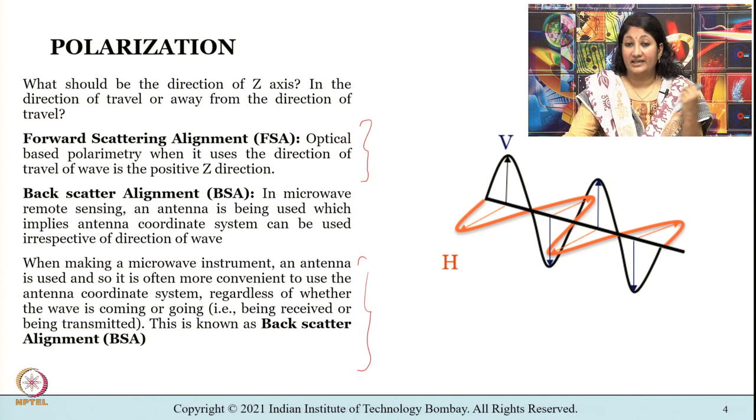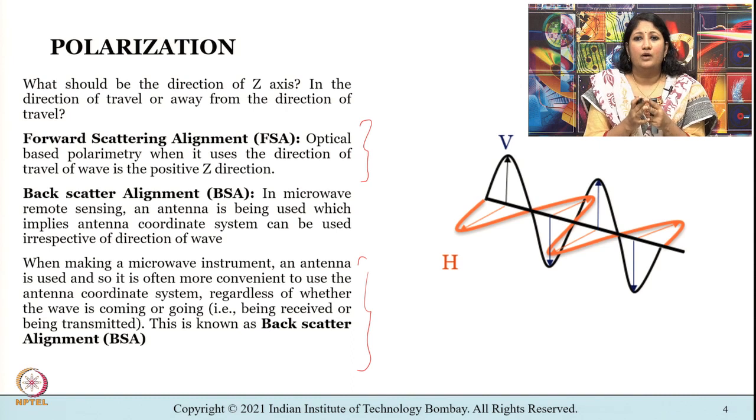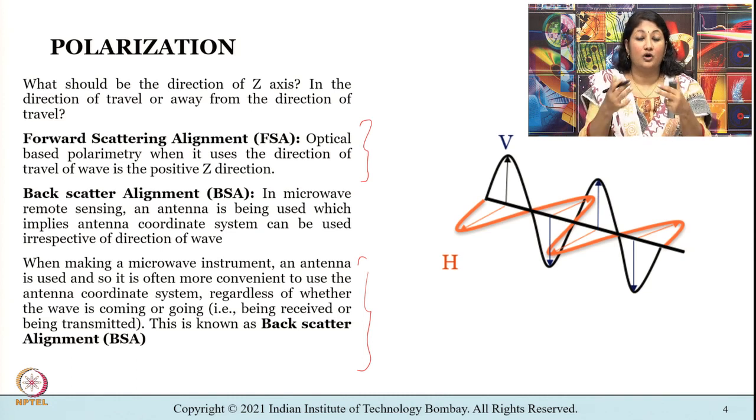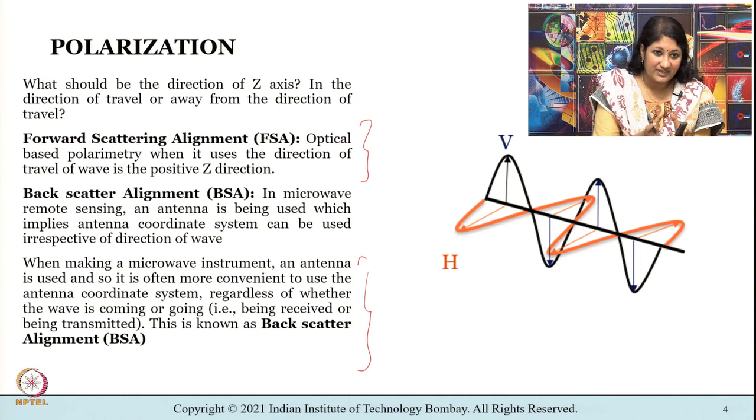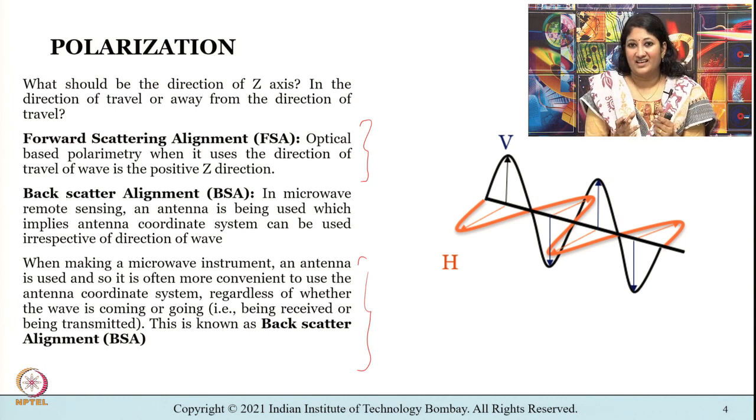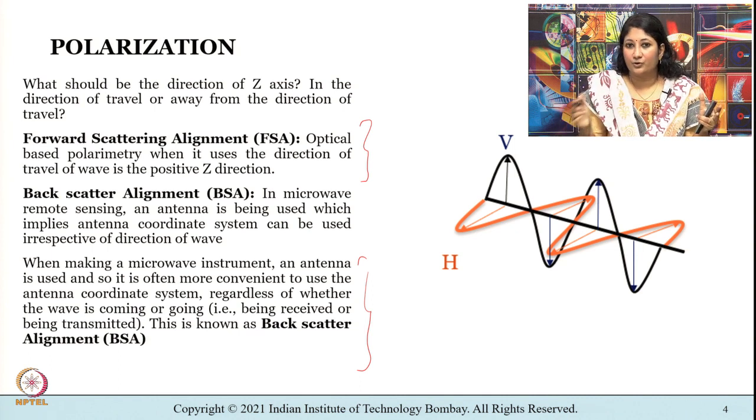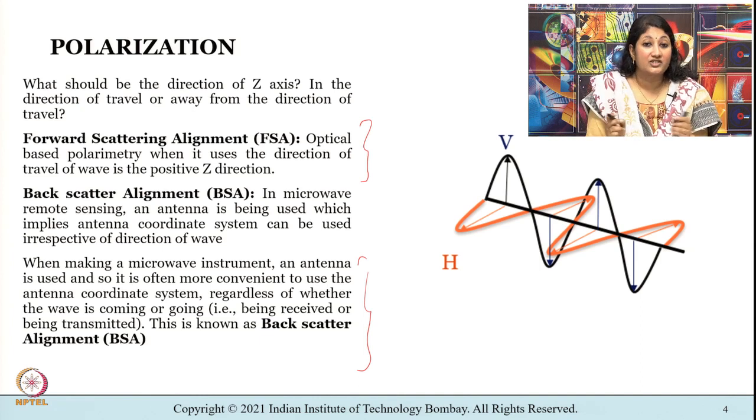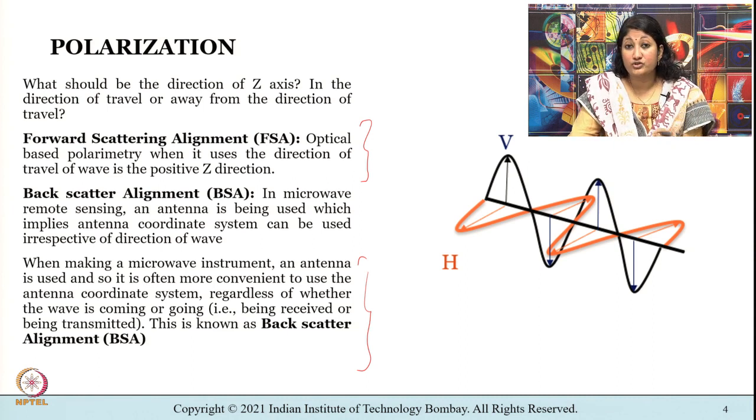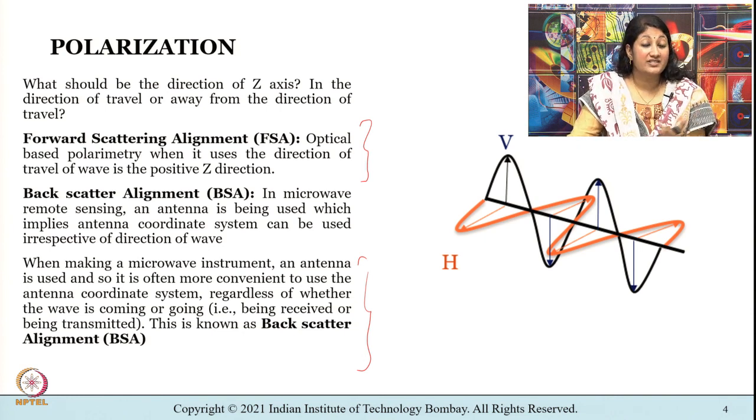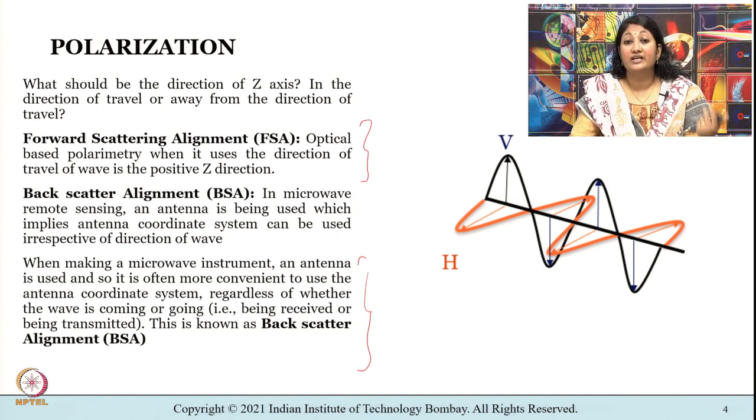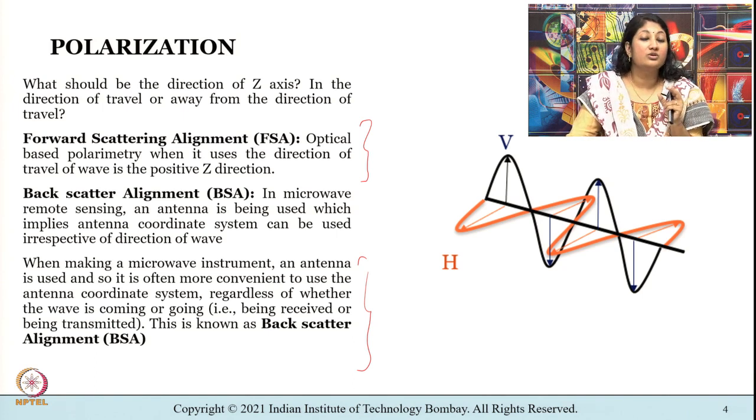When making a microwave instrument we know that an antenna is used without worrying about where the wave is coming from or where it is going to, that is either it is being received or being transmitted and this is known as back scatter alignment BSA. The x and y axis remain as before but the direction of z axis is chosen to be parallel to the direction of propagation of wave. Remember that the use of polarimetric information is very important in both active as well as passive microwave remote sensing and through this short section let us learn about the properties of polarized waves and how to describe them mathematically.